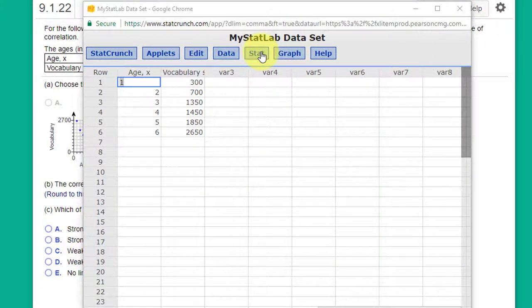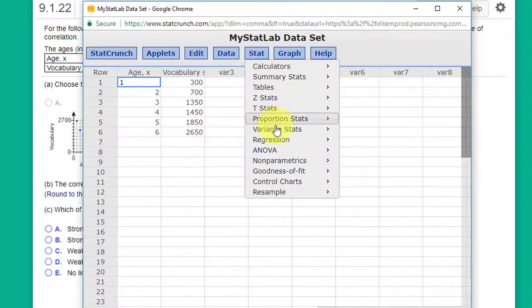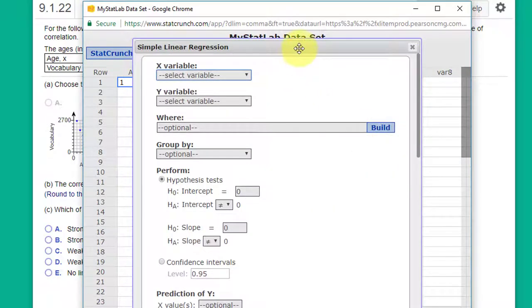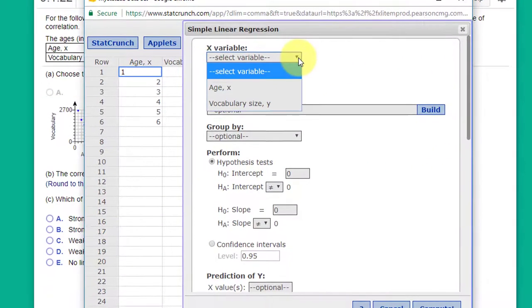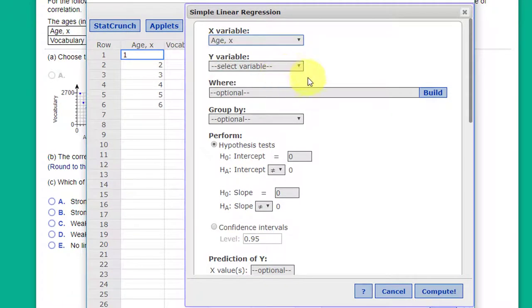We just need to go to stat, regression, simple linear, and I'm going to select my x variable which they say is age and my y variable, the response variable, which will be vocabulary size.